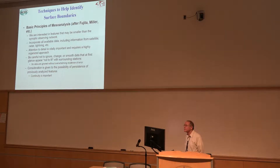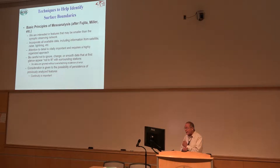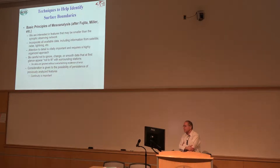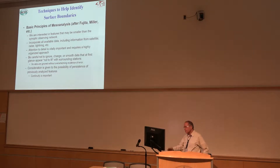What are we looking for? These principles have been around a long time. We're interested in features that may be smaller than the synoptic network — that's one reason why we'll look at satellite, because it can help us with boundaries. We're going to include all available data and pay attention to detail. We're not necessarily going to ignore data that at first looks out of place, unless we're certain it's an observational error. And if we know what boundaries have been placed on previous charts, we're going to continue to see if those are persisting. Continuity is important.